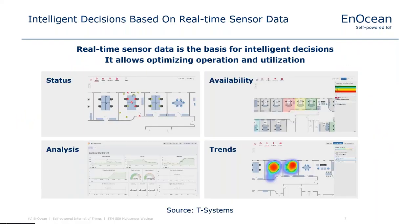Taking the data generated by sensors in such a building enables intelligent decisions based on real-time sensor data. These decisions allow you to optimize operations, monitor building utilization, and show the status of different workplaces. You can analyze parameters such as temperature, humidity, window status, and occupancy, and derive additional information like availability of a free work desk or the next meeting room — giving you insight into trends about how different areas are used and which are underutilized.